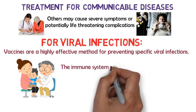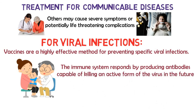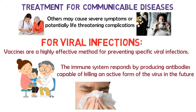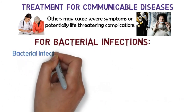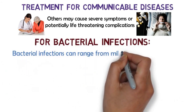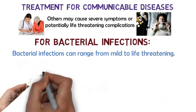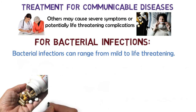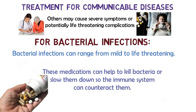When a person receives a vaccine, they are receiving a form of the virus. The immune system responds by producing antibodies capable of killing an active form of the virus in the future. If a person already has a virus, they may require antiviral medications to keep the virus under control. For bacterial infections, which can range from mild to life-threatening, a person may require a course of antibiotics to help control the infection. These medications can help to kill the bacteria or slow them down so the immune system can counteract them.